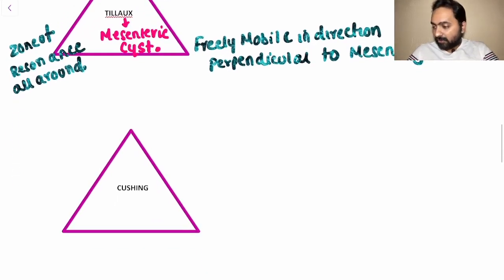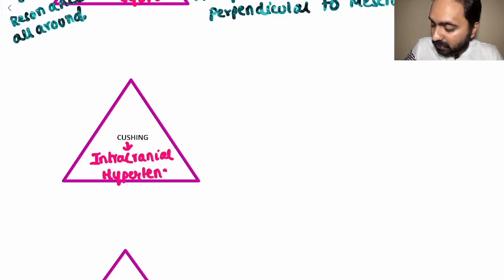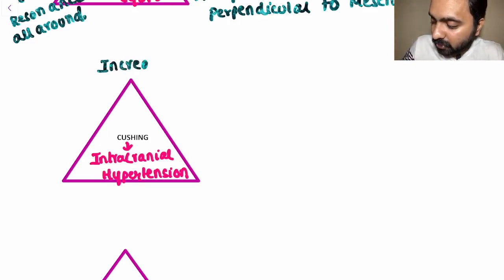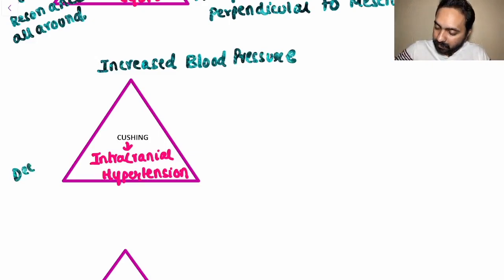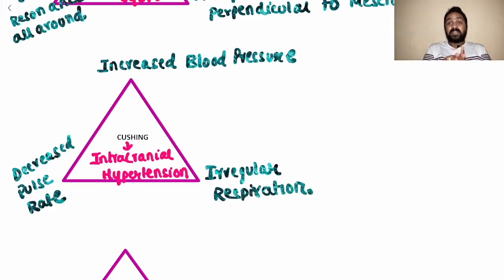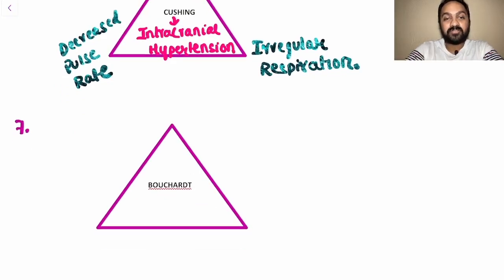The next triad — one we cannot make a mistake on — is Cushing's Triad, seen in intracranial hypertension. It has been asked repeatedly and is commonly found in head trauma questions. The components are: increased blood pressure, decreased pulse rate, and irregular respiration. Do not forget this triad, as it is seen in head trauma patients and patients with intracranial hypertension.